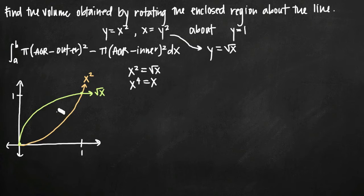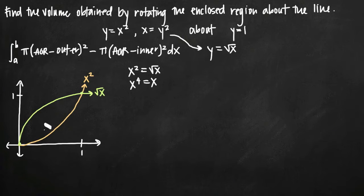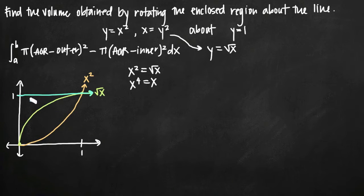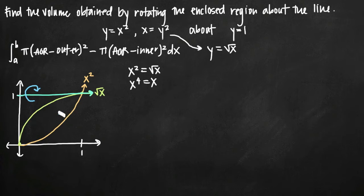Because the curves intersect at these two points, we have a region enclosed by them. We're going to take this region and rotate it around the line y equals 1, which will form a volume, and we want to find the value of that volume.